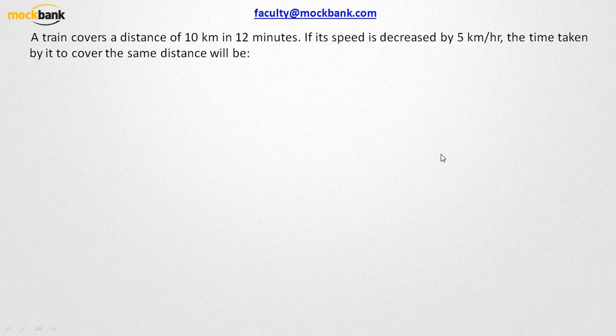This was one of those questions posted yesterday on our website. Now in this problem it says that a train covers a distance of 10 km in 12 minutes. If the speed decreases by 5 km per hour, the time taken by it to cover the same distance will be—that same distance is nothing but 10 km.